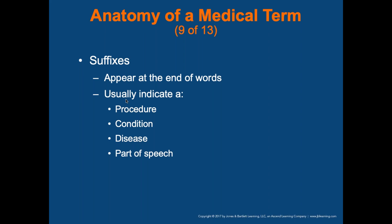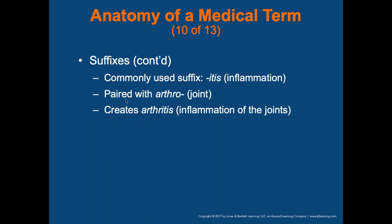Suffixes usually appear at the end of a word and indicate a procedure — like '-oscopy,' as in colonoscopy — or a condition, disease, or part of speech. One key suffix is '-itis,' which means inflammation. So appendicitis, pancreatitis — any time you see '-itis,' there's inflammation somewhere.